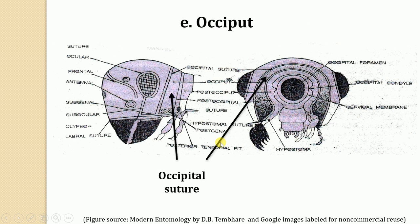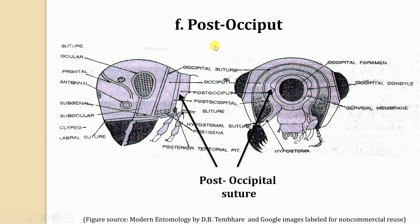The occiput is a U-shaped posterior cuticular band representing the area between the occipital suture and the post-occipital suture. In higher insects, however, the occiput as a sclerite is absent or the occipital suture is obscure.